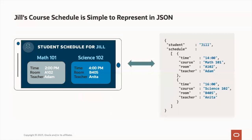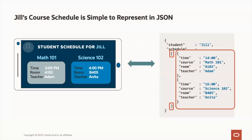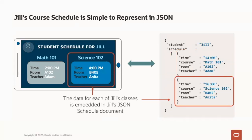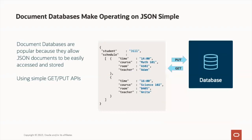So this is where JSON comes into play. JSON makes it extremely easy to represent the schedule in the appropriate data format. Here we can see a document for the student's schedule for Jill, with all of the relevant information for each of Jill's classes or courses stored in an array, represented by the square brackets. It makes it very easy to map the information for each course in a single tile for Jill's schedule, as all of the relevant data — including the time, the room, and teacher — is located in one place and can be retrieved in a single database call or get operation. Document databases are popular because they allow JSON documents to be easily accessed and stored using simple get and put APIs, which is an extremely lightweight model for accessing the underlying data.